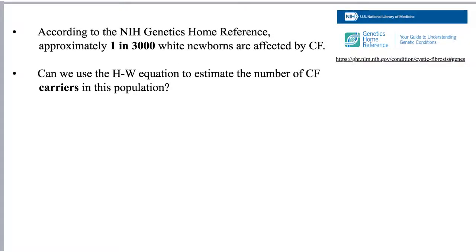Let's get into the problem. According to the National Institutes of Health, approximately 1 in 3,000 white newborns are affected by cystic fibrosis, and we want to use the Hardy-Weinberg equation to estimate the number of cystic fibrosis carriers in this population. The first step is to figure out what you know: 1 in 3,000 are affected, and to be affected you must be homozygous recessive at that locus.